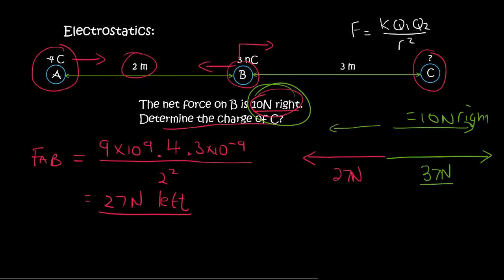And so now we can work out the charge of C. We can say FAC—I mean FBC, sorry—is equal to 9 times 10 to the 9, times B's charge, which is 3 times 10 to the minus 9, times C, which is X, and the distance between them is 3 squared.